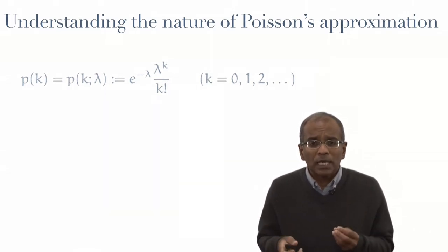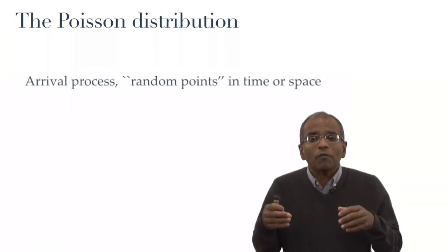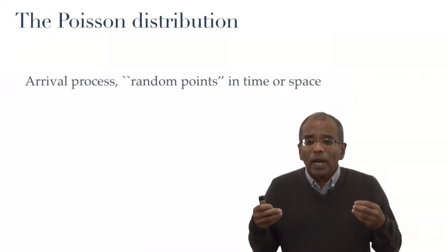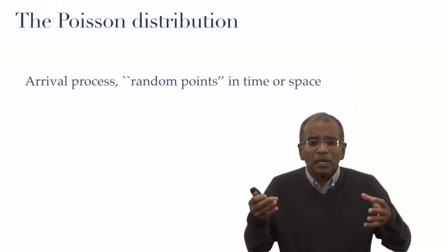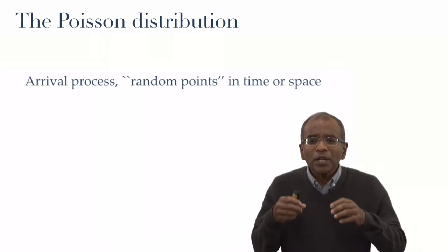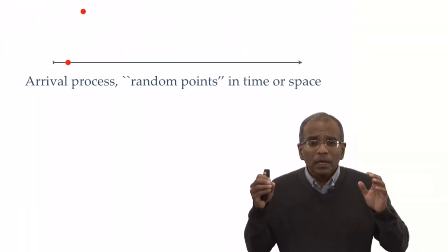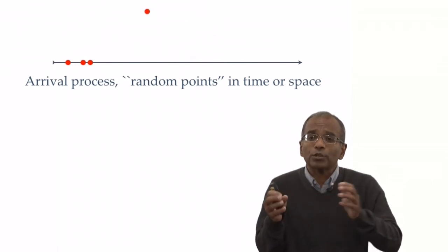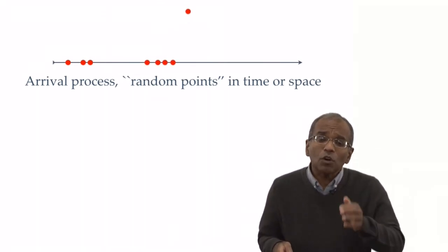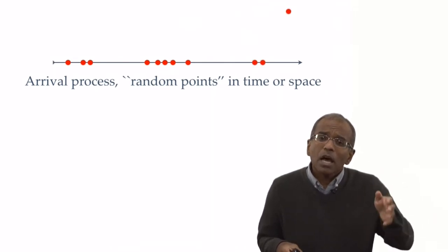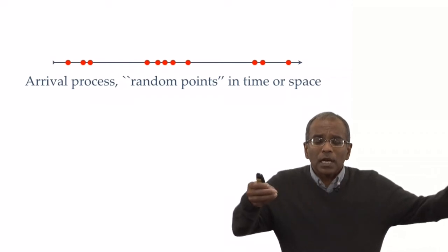And this leads us now to considering the Poisson, particularly in the context of arrival processes, where you have arrivals in time, at random points in time, giving rise to an ensemble. So the picture we have in mind is something like this: Imagine that time is flowing to the right and that you have arrivals of people, packets, cars, arriving at random points in time and filling up the time axis.